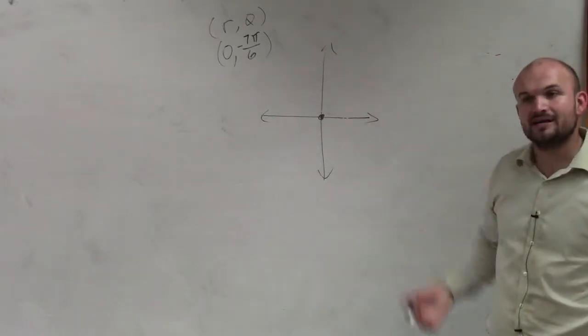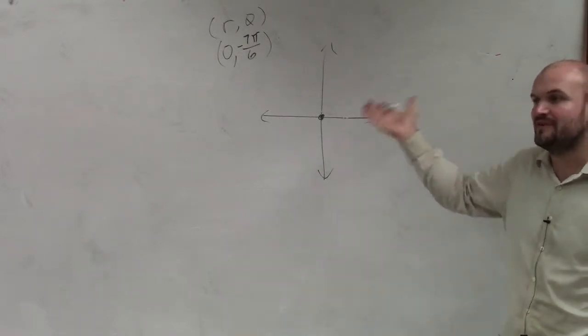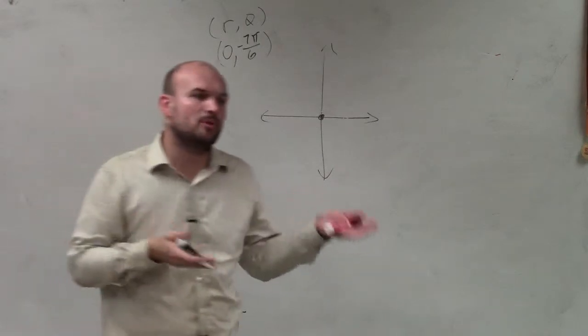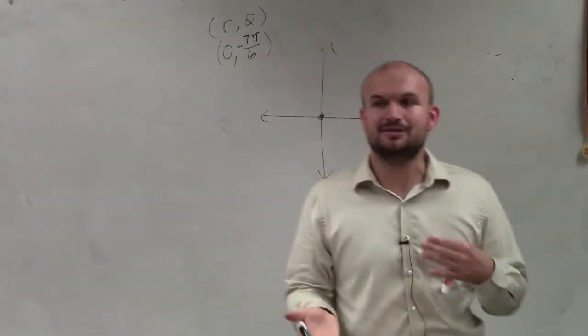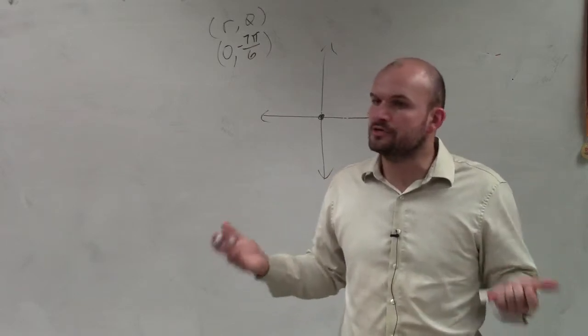However, we can find alternate forms of this point by simply finding the coterminal angle. So when it asks you to graph the point and then find multiple forms, what they're asking you to do is find with the same radius, but just find coterminal angles.